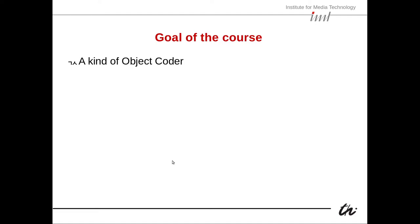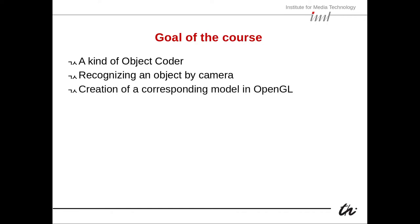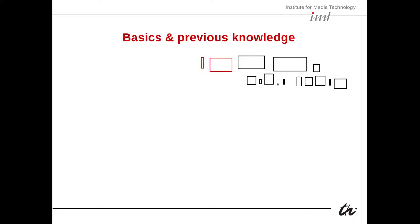As part of computer animation, we want to be able to build something like an object coder — a graphical object. That means first recognizing an object by a camera like a webcam. For instance, you recognize a person's head, and then you create a corresponding model in OpenGL — maybe a sphere shaped like a head — and then you display it.